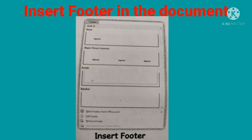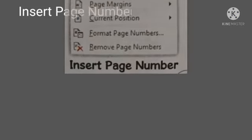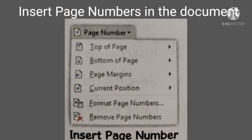To insert a footer in the document: first, on the Insert tab, in the Header and Footer group, click on Footer. Second, a drop-down menu appears. Third, click on Edit Footer. Fourth, type the text in the footer area. You will be able to see the header and footer in your document. Double-click on any part you wish to edit.